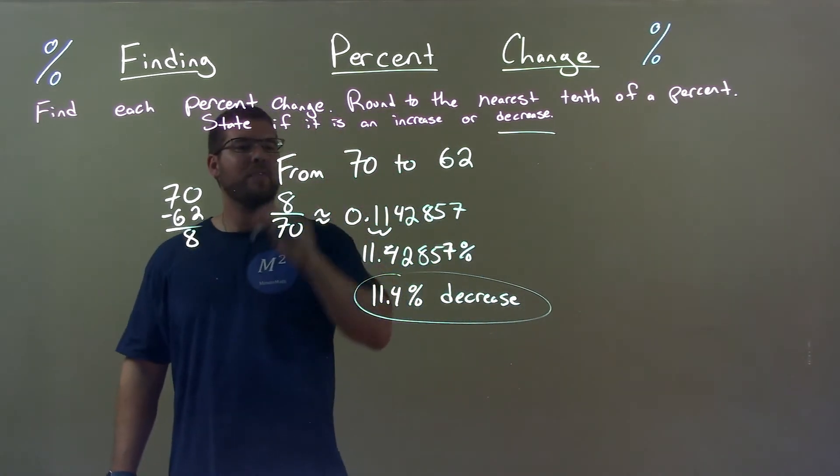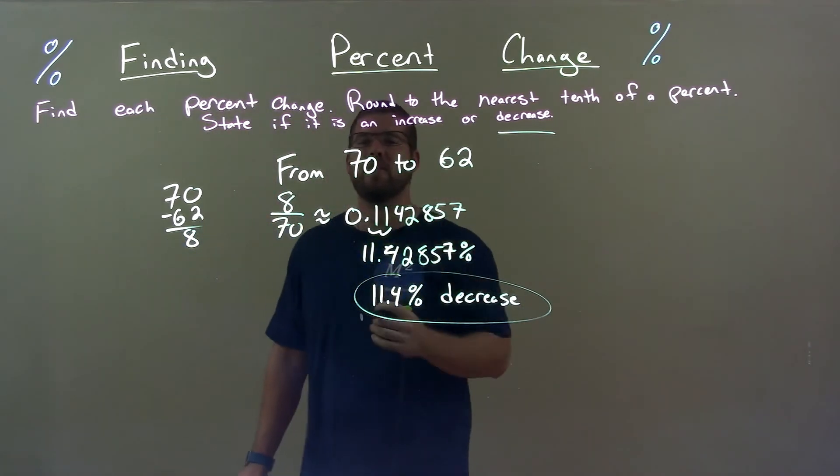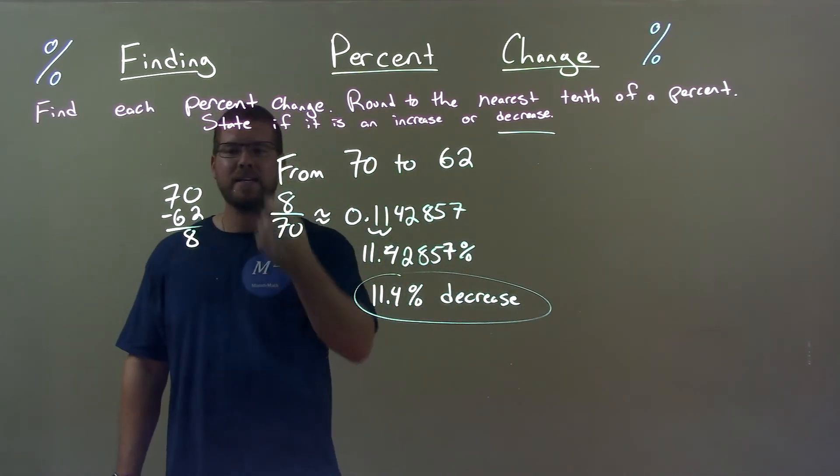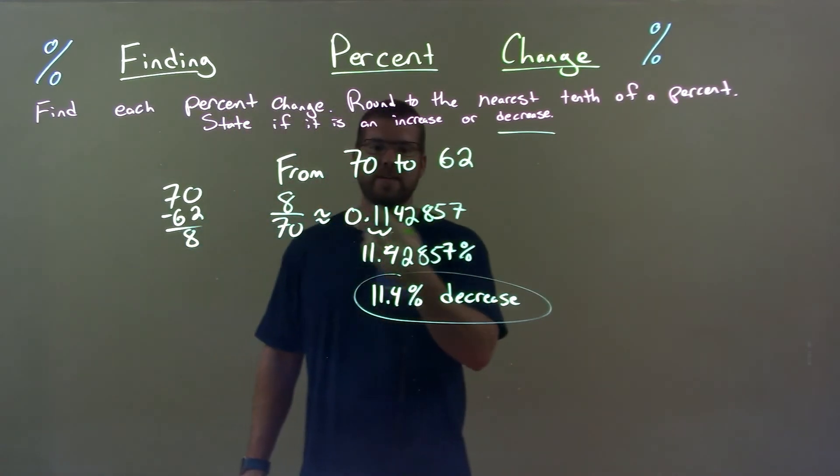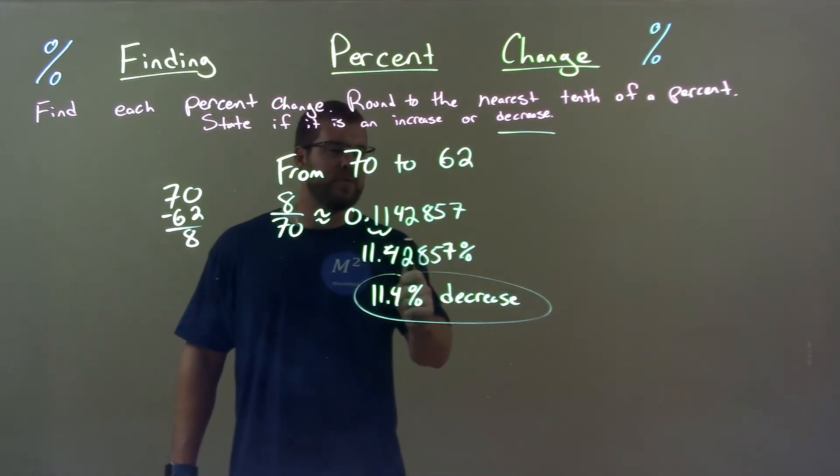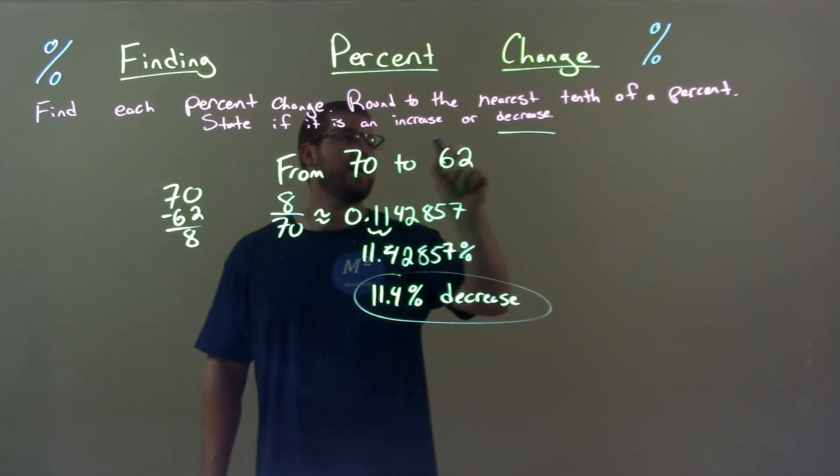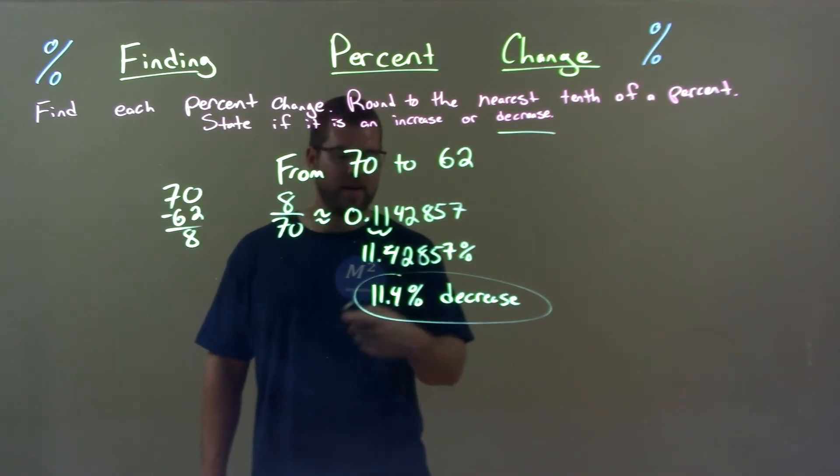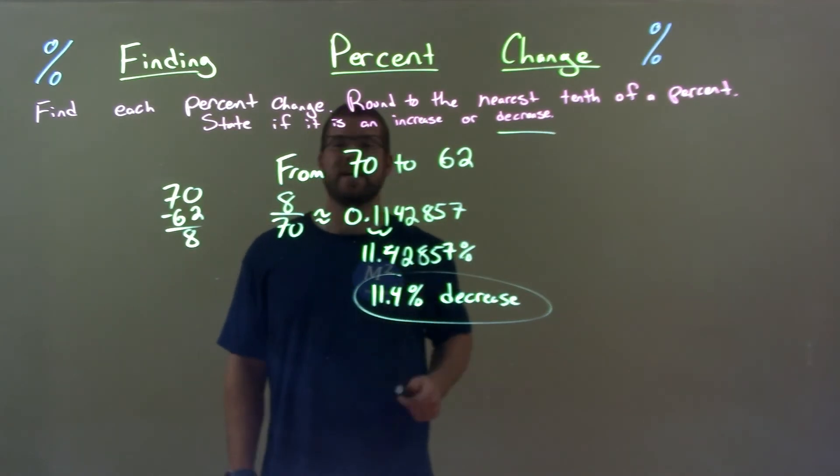Quick recap. We're given from 70 to 62, and we have to find the percent change. The difference between the two numbers is 8. 8 divided by the first number is this decimal. Then we converted that to a percent, rounded that percent, realized that it was a decrease. So our final answer, 11.4 percent decrease.